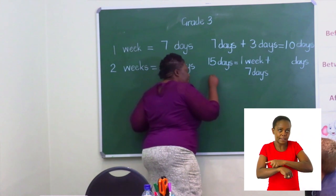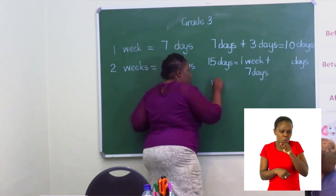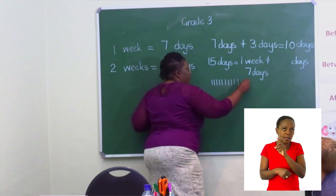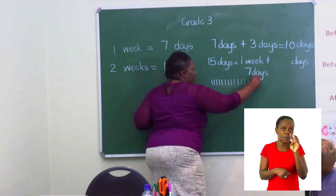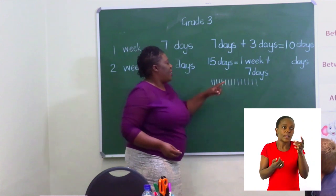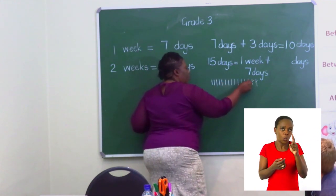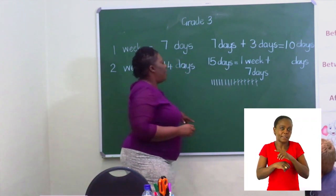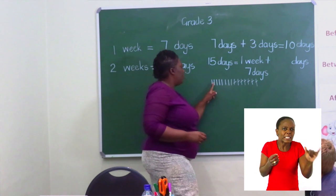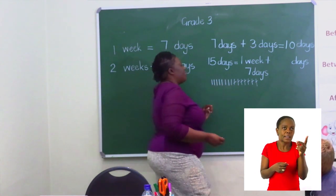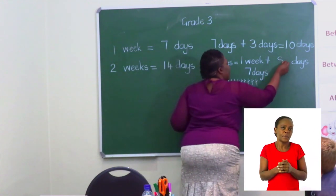Let me put my 15 sticks — counting one through fifteen. And I'm going to remove seven days — counting one through seven. How many am I left with? Counting the remainder: eight. So I have eight days.